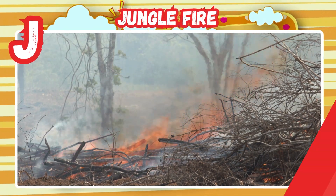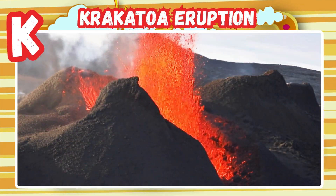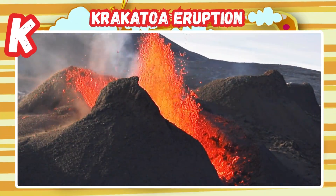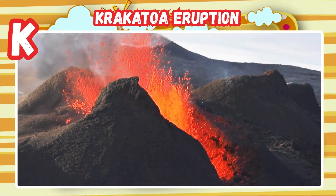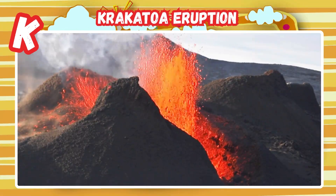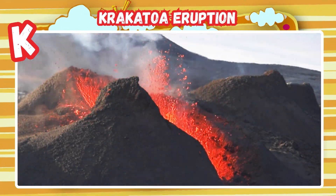K is for Krakatoa eruption. A powerful volcano erupts. Ash fills the sky and air.